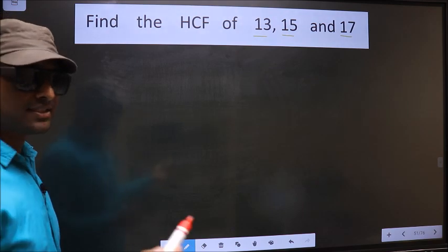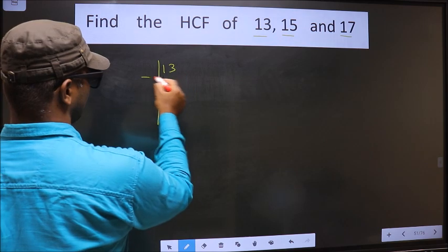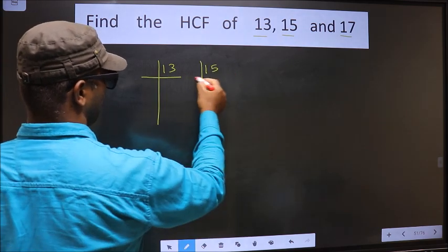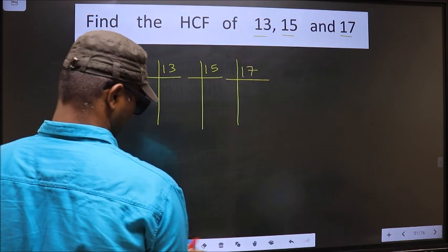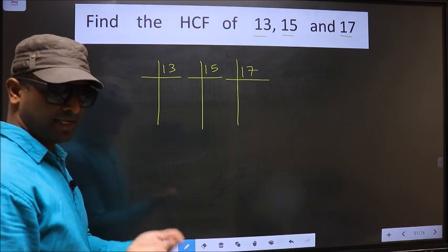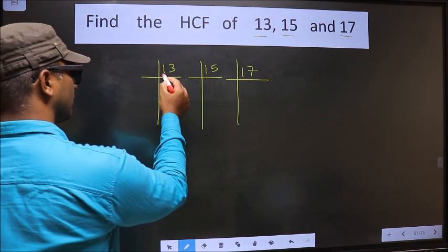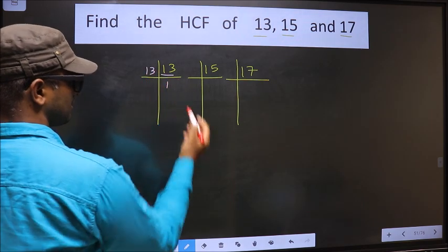That is. 13, 15, 17. Here we have 13. 13 is a prime number, so we take 13 once, 13.